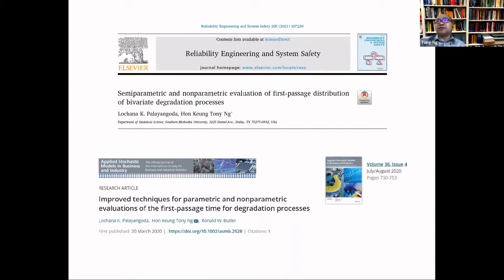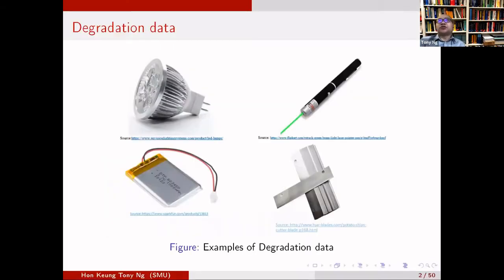If we have bivariate or higher dimension, how can we model the dependency between different stochastic processes? I want to explain what degradation data is and what is first passage time distribution. Some items like LED lighting, lasers, and batteries are subject to degradation. They all have high reliability — like a battery on your cell phone.